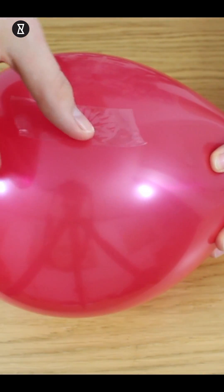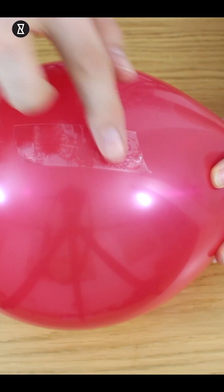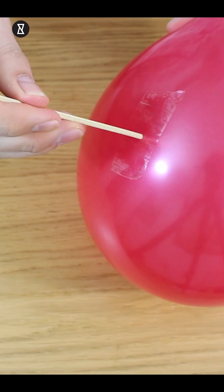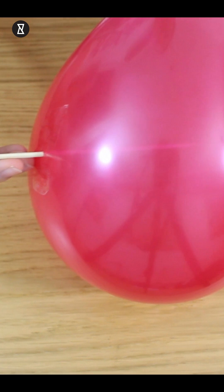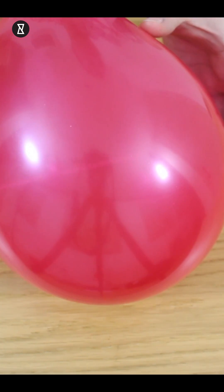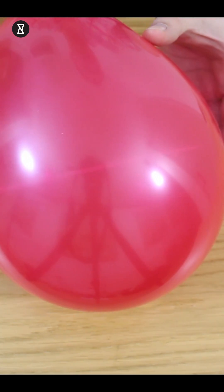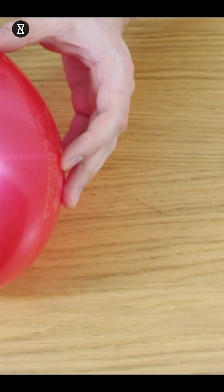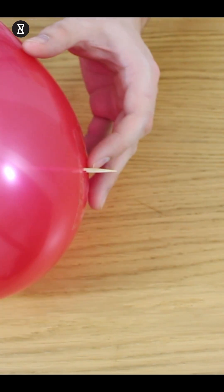Then turn the balloon around and stick a piece of tape onto the opposite side. Then take your skewer and very carefully, very slowly, push the skewer through the balloon. You might want to try twisting it slightly just as you do this. You'll see that the skewer goes all the way through the balloon without the balloon popping.